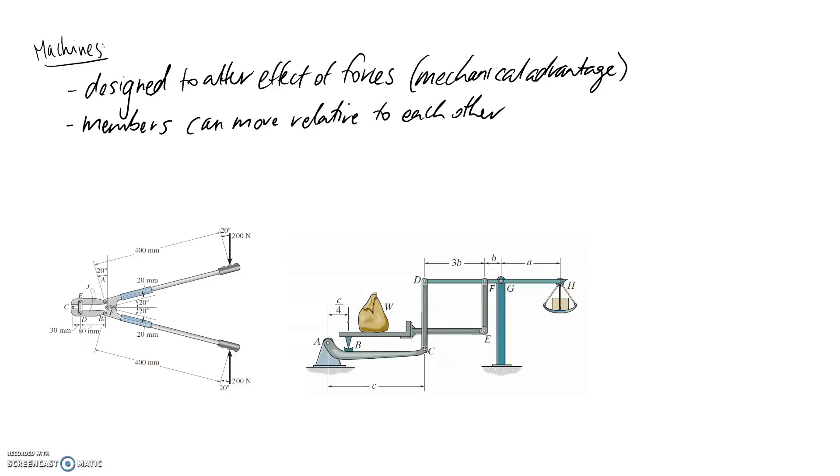So the other point about machines is that members can move relative to each other. So certainly here, when we push down on these two handles, we're going to move the handles and change the force at the end. Here again, if we change the weight out here, we're potentially going to change the position of this arm and make it move. So that's the difference between frames and machines.